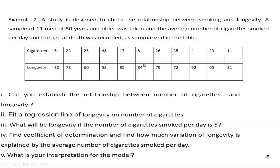From this data we have to use our regression method. As I told you, for regression analysis, first of all you have to identify the two variables — one is cigarettes and one is longevity. We have to find the relationship, which we can do by the graph or by finding the regression coefficient. Let us see how we can find the correlation between cigarettes per day and longevity.